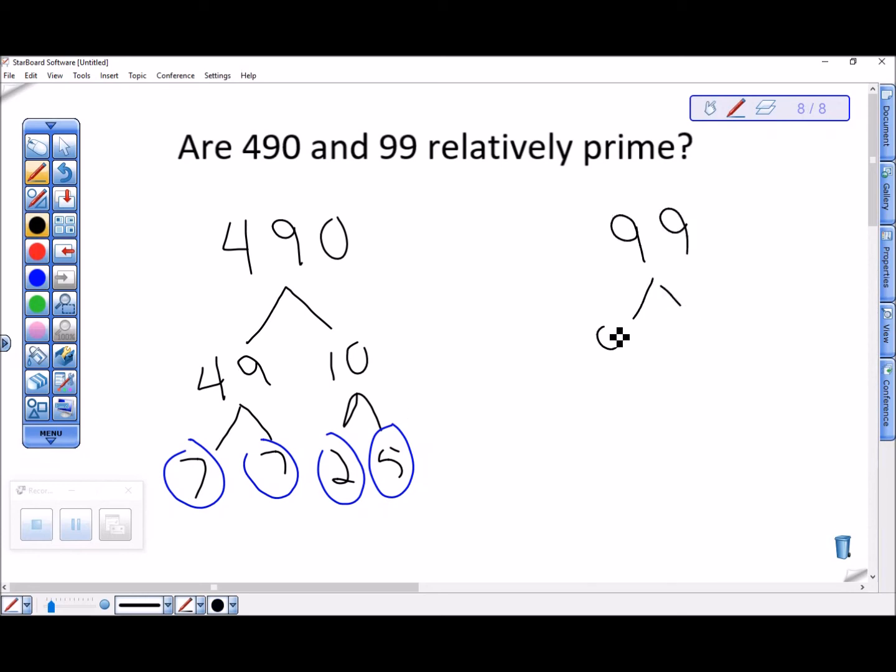let's factor 99. 99 is 9 times 11. 9 is 3 times 3, and 11 is prime.